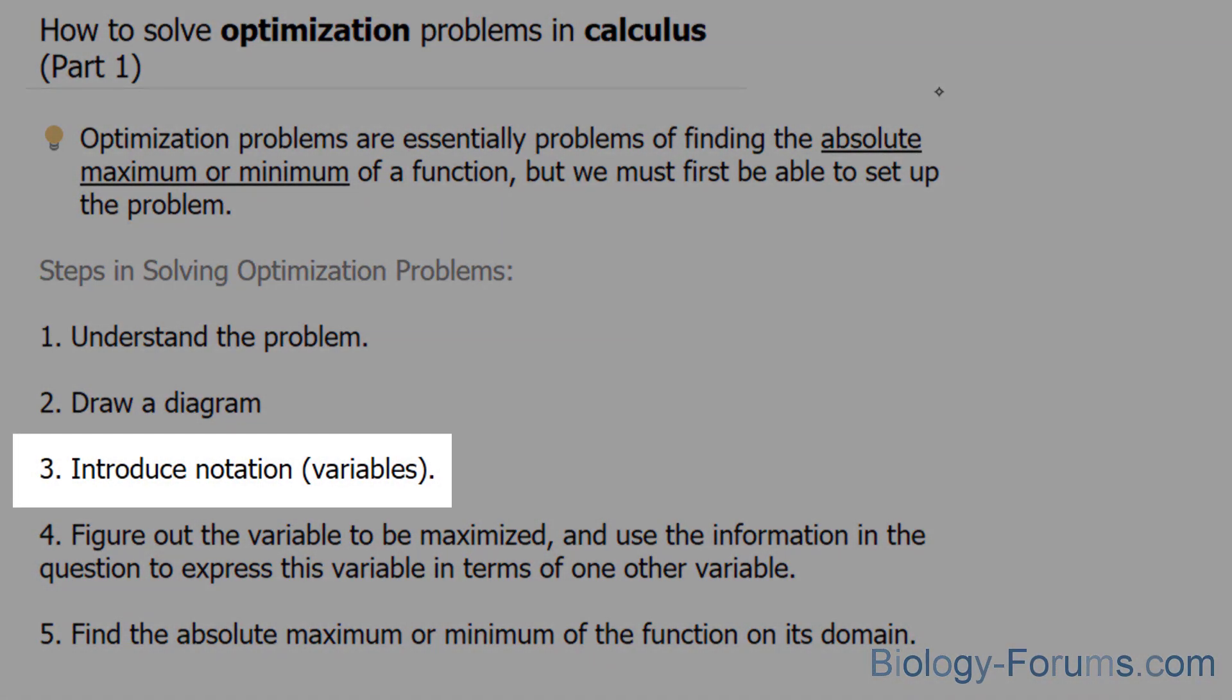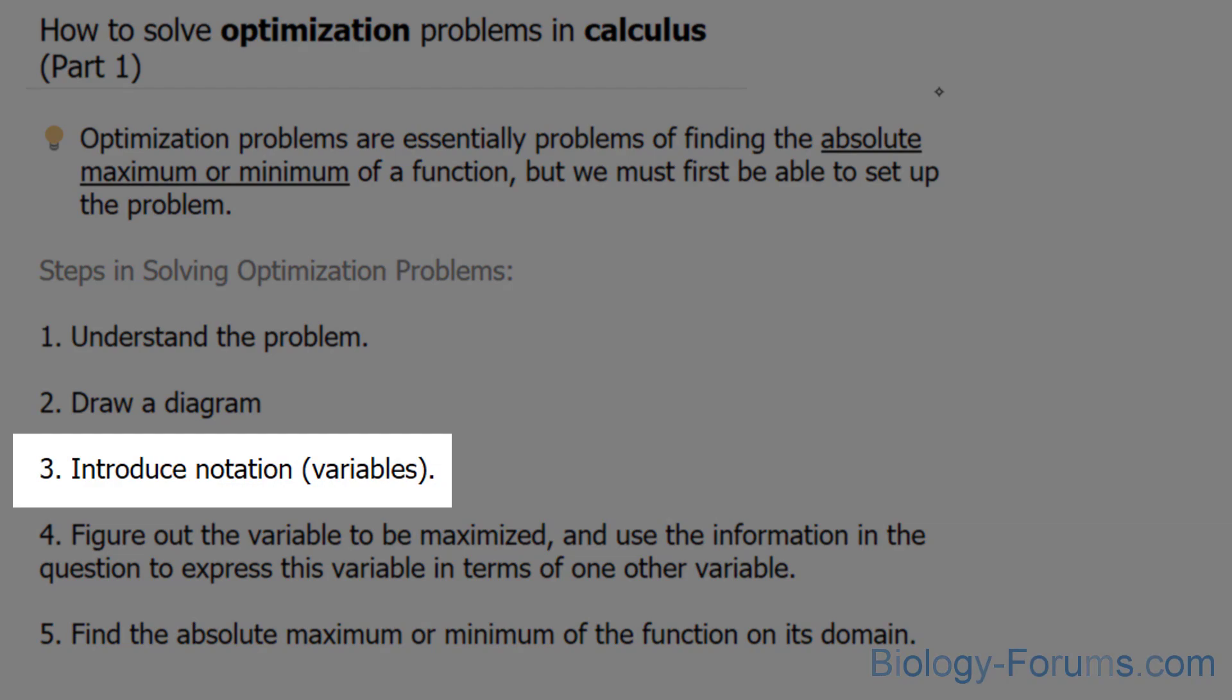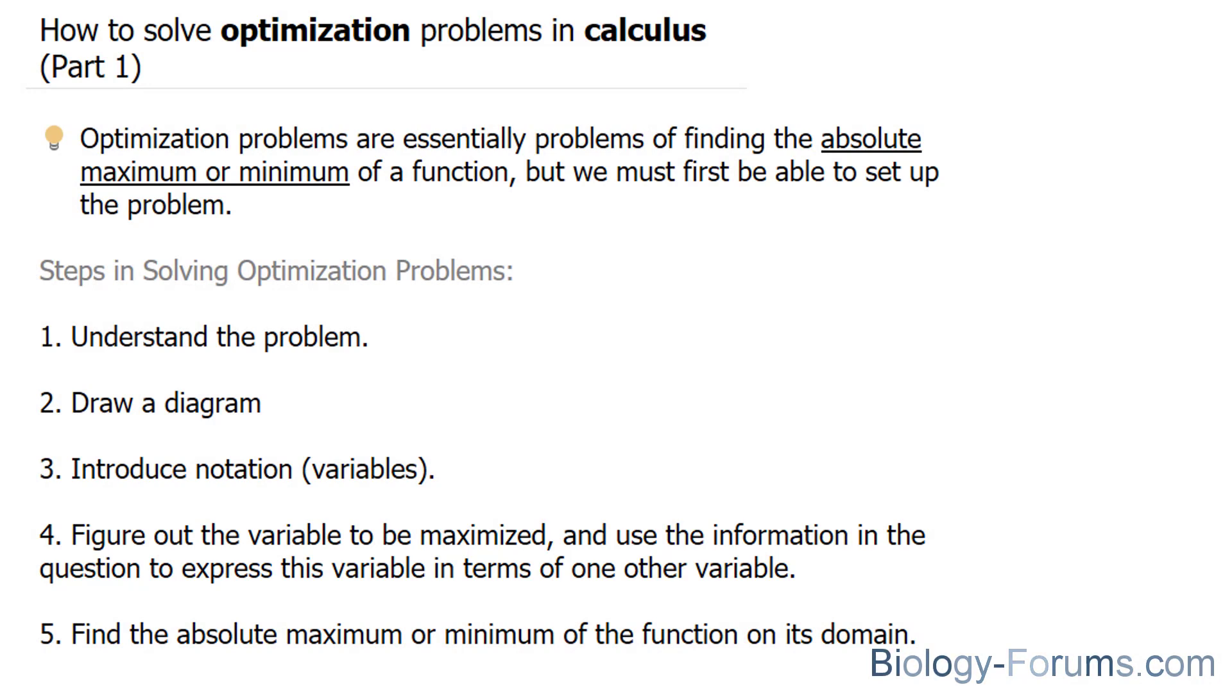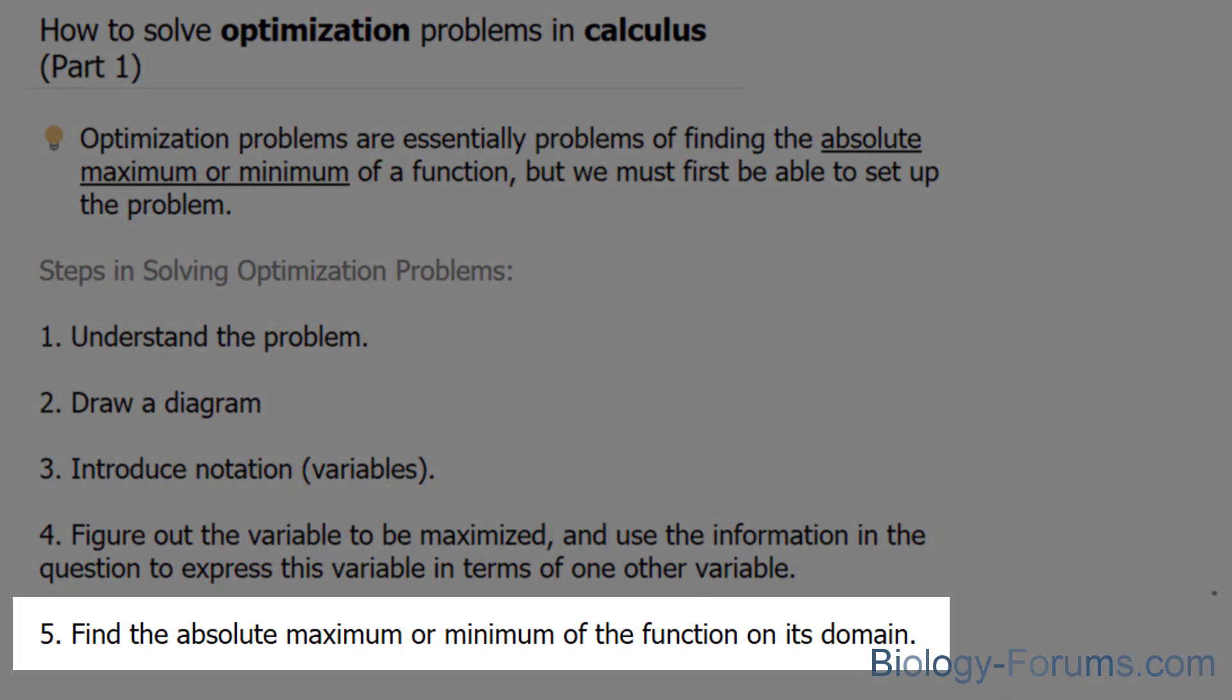Three, introduce notation, in other words, introduce the variables. Four, figure out the variable to be maximized and use the information in the question to express this variable in terms of one other variable. And lastly, find the absolute maximum or minimum of the function on its domain.